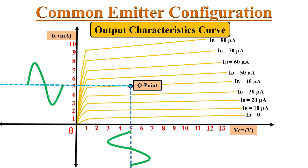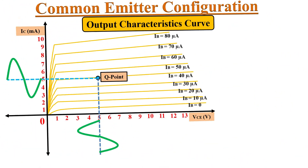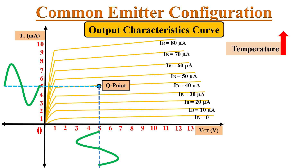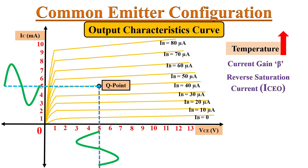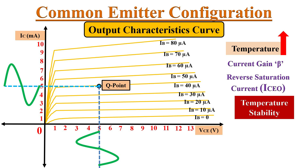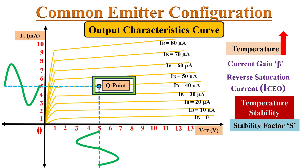How stable the operating point is depends upon temperature. With a change in temperature, the operating point changes, because device parameters like current gain beta and the reverse saturation current ICEO will change. Hence, the biasing circuit should give temperature stability, such that even if there is a change in temperature, there must be no or minimum change in the operating point. The stability of the operating point is defined by the term stability factor, which indicates the change in operating point with change in temperature. Let's see how stability changes with different types of biasing configurations.